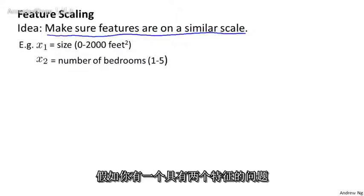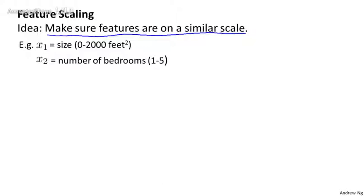Concretely, let's say you have a problem with two features, where x1 is the size of the house and takes on values between 0 to 2000, and x2 is the number of bedrooms and maybe that takes on values between 1 and 5.